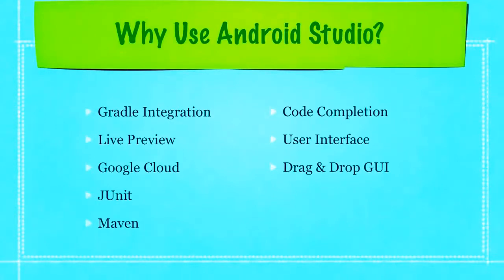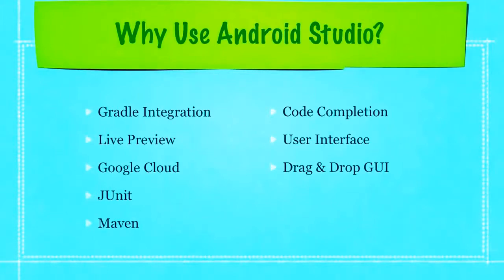Android Studio also has native support for Google Cloud. Eclipse has that through a plugin, but this is going to be built in and it's going to make it very easy for you to run server-side code using Google App Engine. Android Studio also includes support for JUnit, making it very easy to test our applications. It also allows you to import remote libraries from Maven Central — all built in. Code completion accuracy is going to be much better compared to Eclipse, and since everything is built just to make Android apps, Android Studio is going to have a much more logical system. The drag-and-drop interface is also going to save you a ton of time in designing your app.